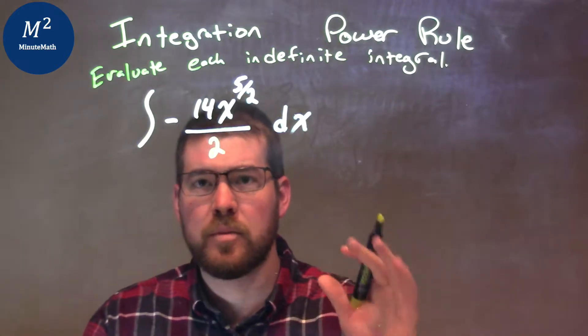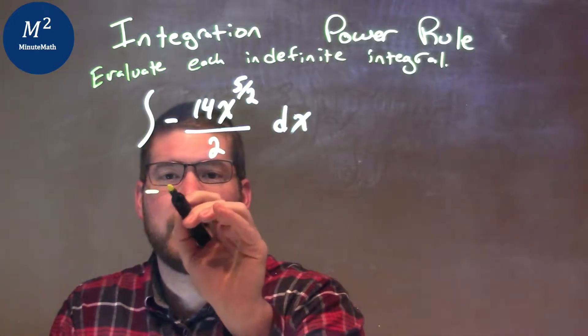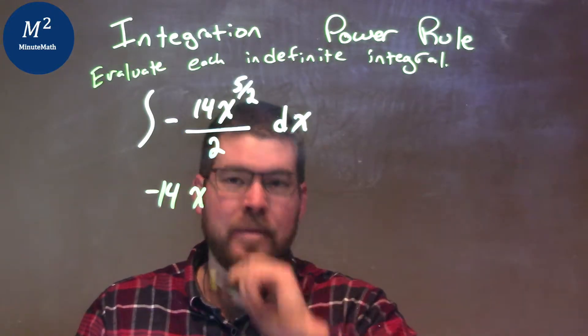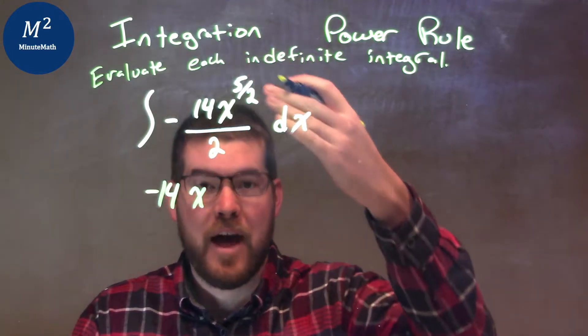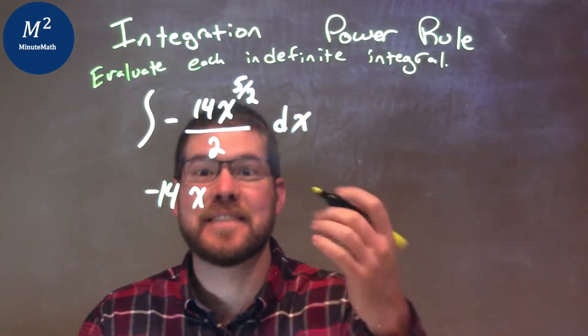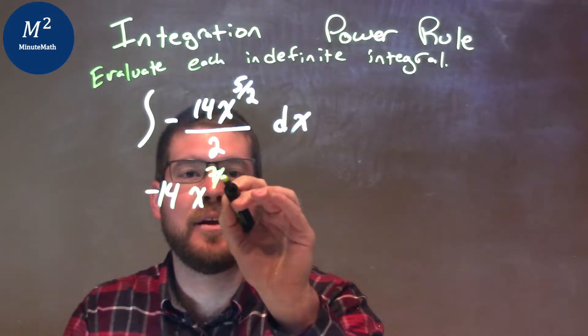So the same rule still applies. Keep my constant out front, negative 14x. Now we add the exponent by 1. 5 halves plus 1, well, it's 5 halves plus 2 over 2, which is 7 halves. So 7 halves right here.